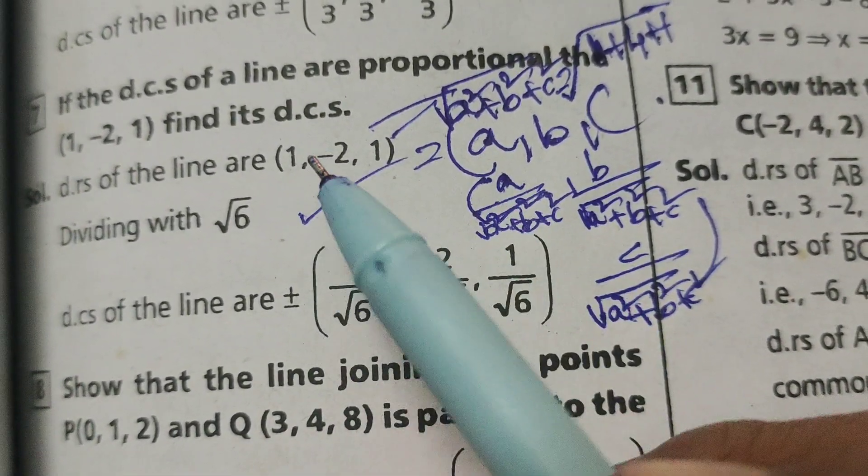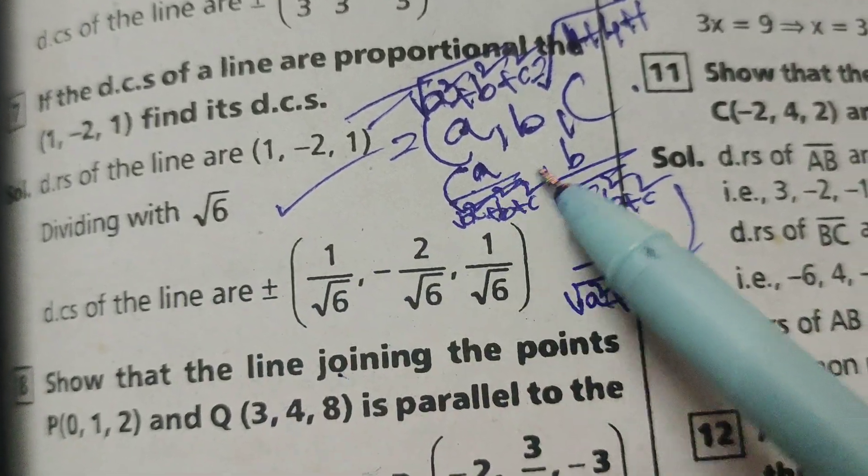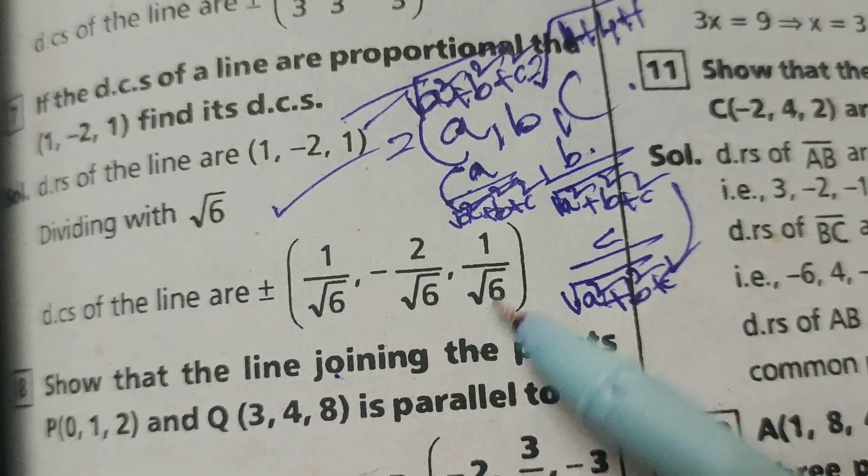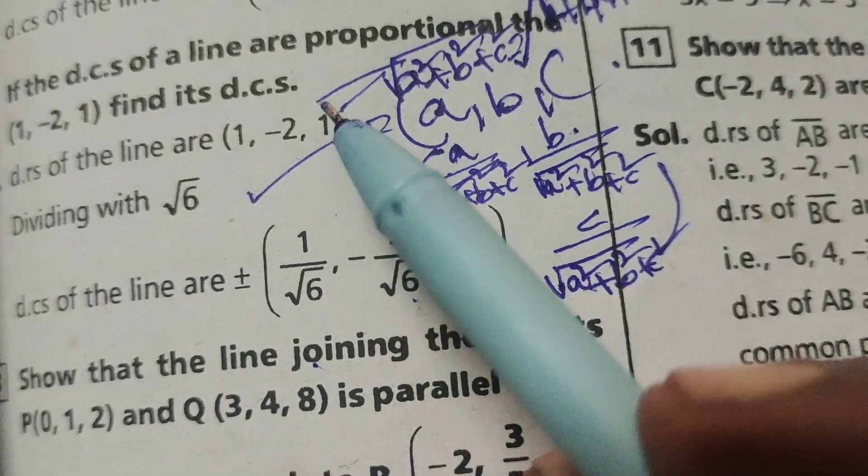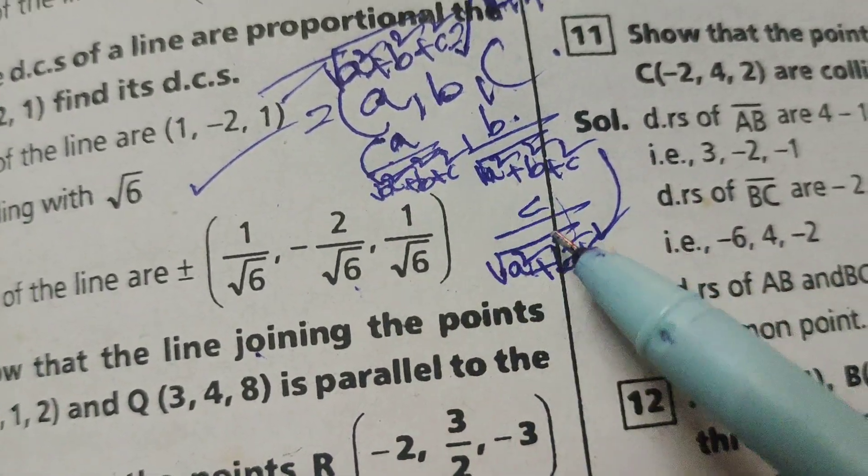Now here, applying this formula: a means 1, so 1 by root 6; b means minus 2, so minus 2 by root 6; and c means 1, so 1 by